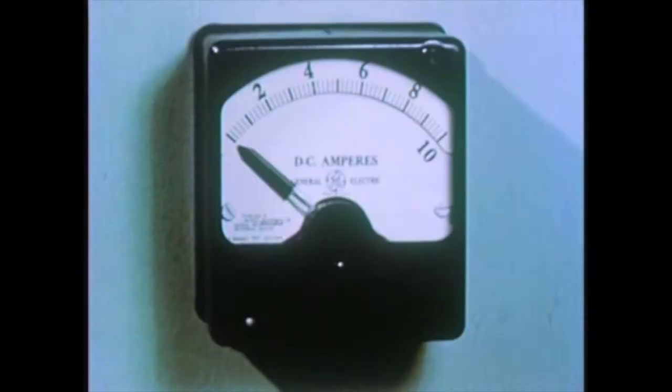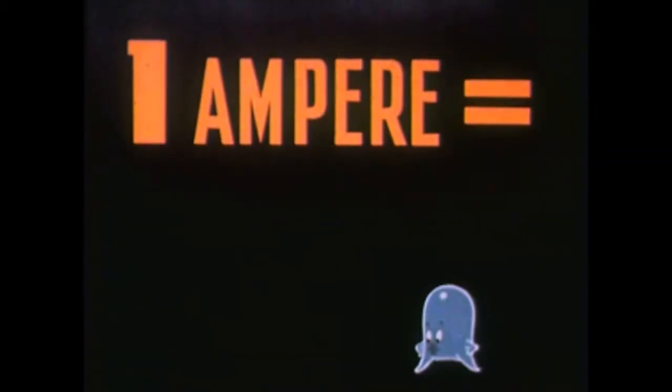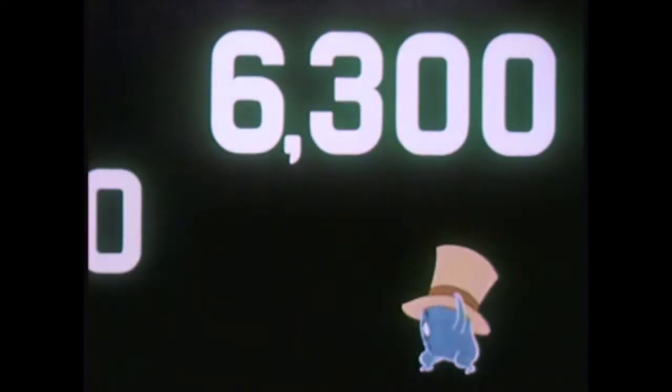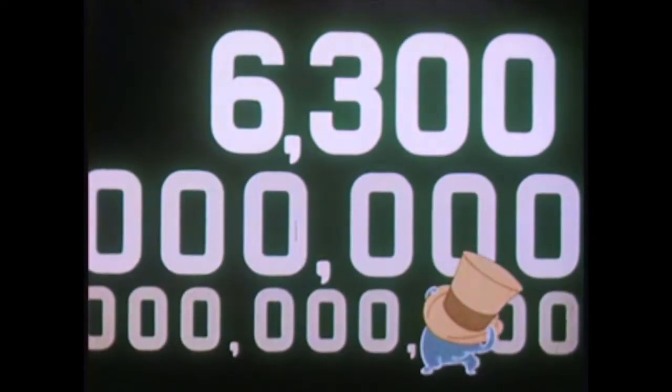The unit of electric current is the ampere. One ampere. Now hold on to your hat. Six billion, 300 million, billion electrons passing any given point in one second. Current or amperage then is the number of electrons that pass a given point in a given time.